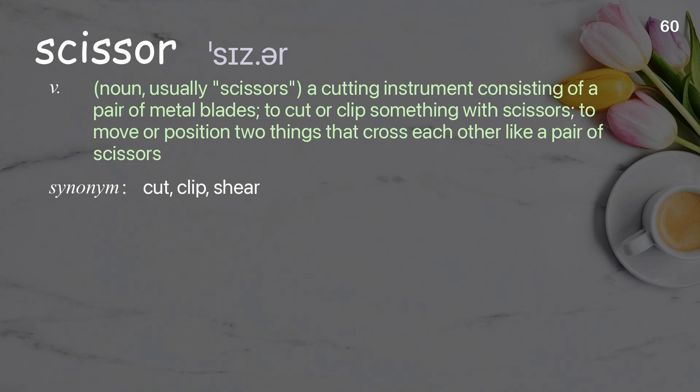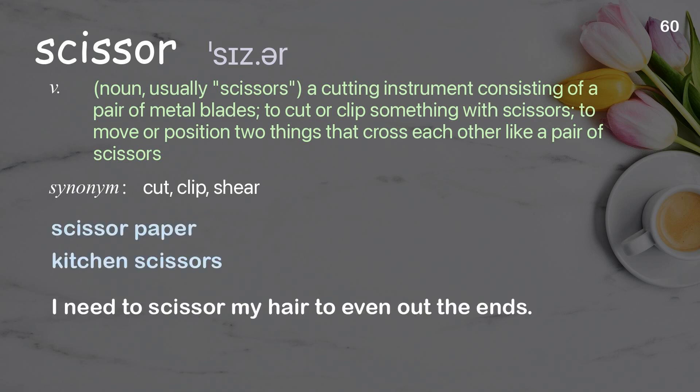Scissor: noun, usually scissors — a cutting instrument consisting of a pair of metal blades; to cut or clip something with scissors; to move or position two things that cross each other like a pair of scissors. Examples: scissor paper, kitchen scissors. I need to scissor my hair to even out the ends.